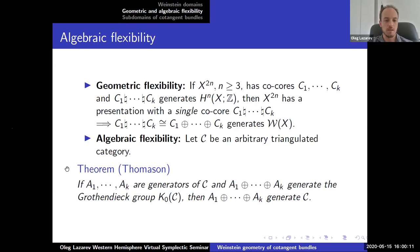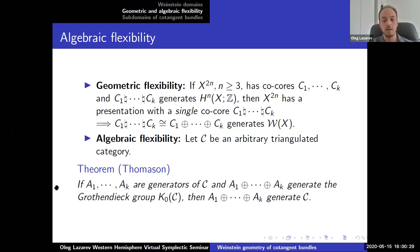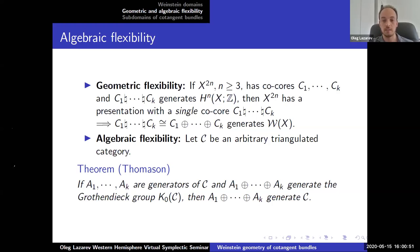To rephrase: if two Lagrangians have the same co-mass they define the same class in the Grothendieck group, and this theorem holds for any n — recall the symplectic flexibility results all required n to be at least 3, whereas this theorem and Thomason's theorem require no dimension hypothesis. The proof: the n minus 1 handles give relations in n-dimensional singular cohomology (via the differential), and they also give acyclic twisted complexes in the Fukaya category which come from the index n handles. I think this is a good place to stop — thank you for listening.